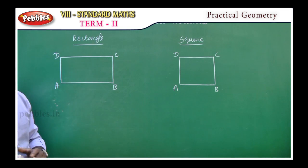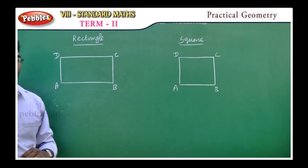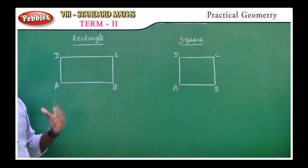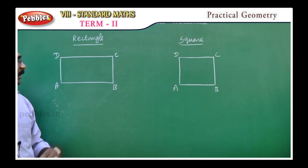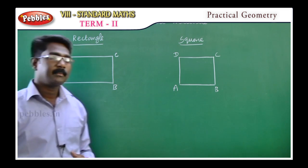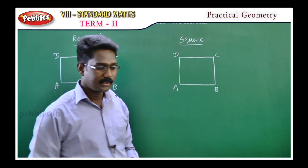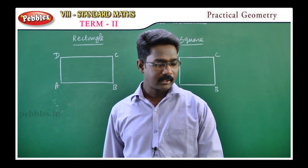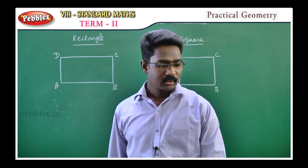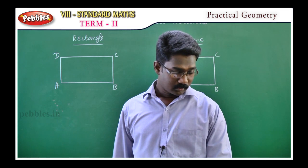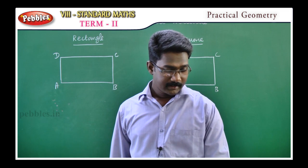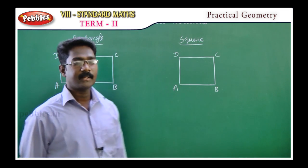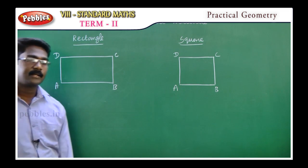So, in the property, we consider the concept of the parallelogram. A rectangle — opposite sides are equal. In a parallelogram, opposite sides are equal. The definition of the rectangle is: a parallelogram in which one of the angles is a right angle. One of the angles is a right angle.